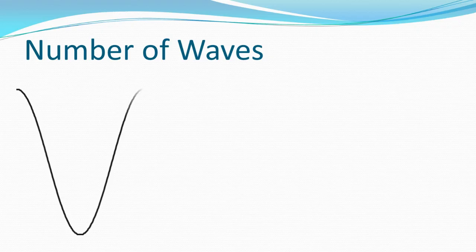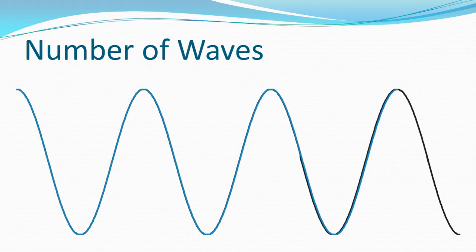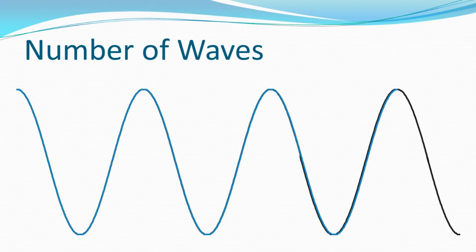Let's count waves. We have an example of a transverse wave. Traditionally, I would count crest to crest — that's one wavelength. So I have one, two, three, and a half waves. Another way to observe this: each section has a trough, and on either end it makes up a crest — two halves of a crest. So we have a crest and a trough, a crest and a trough, a crest and a trough. The last section has half a crest and half a trough, so it's only half a wave.